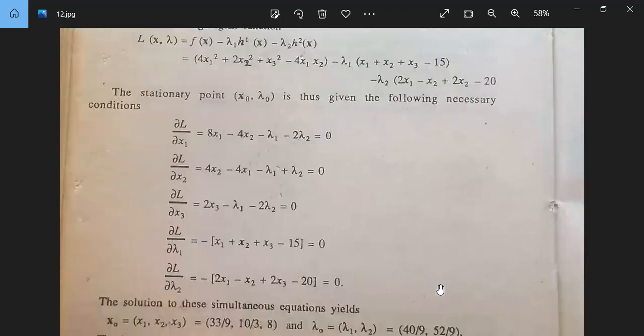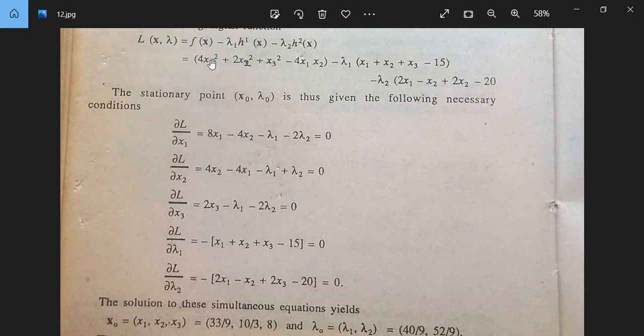Del L by del x_1, you have to do that. Differentiate with respect to x_1, so this is 8x_1 minus 4x_2 minus lambda_1 minus 2 lambda_2 equal to 0. And differentiate with respect to x_2 partially, so it is 4x_2 minus 4x_1 minus lambda_1 plus lambda_2 equal to 0.